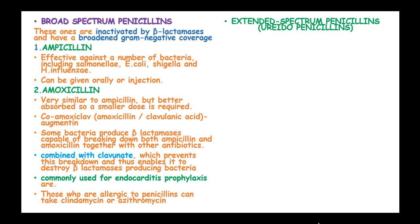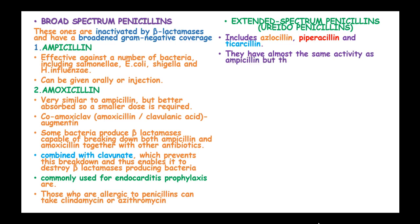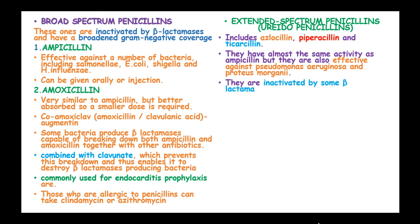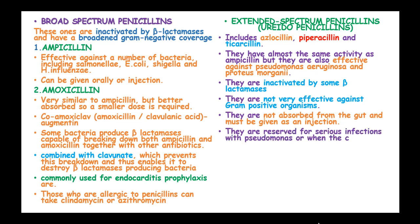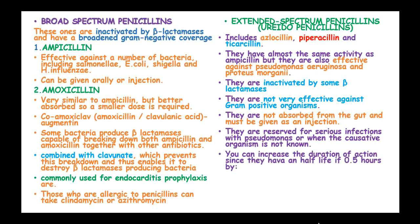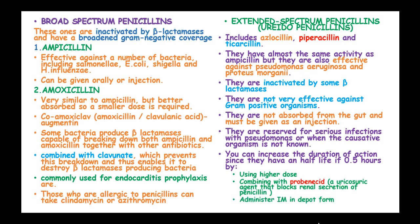Extended spectrum penicillins, or ureidopenicillins, include Azlocillin, Piperacillin and Ticarcillin. They have almost the same activity as Ampicillin but are also effective against Pseudomonas aeruginosa and Proteus morganii. They are inactivated by some beta-lactamases and are not effective against gram-positive organisms. They are not absorbed from the gastrointestinal tract and must be given as an injection. They are reserved for serious infections with Pseudomonas or when the causative organism is unknown. The duration of action can be increased, as they have a half-life of 0.5 hours, by using a higher dose, combining with probenecid — a uricosuric agent that blocks renal excretion of penicillin — or administering in depot form.